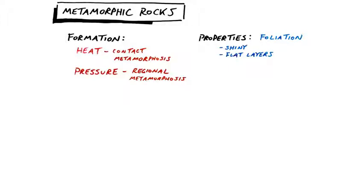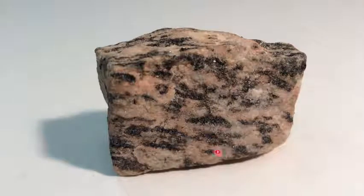The last thing foliation can mean is that it forms mineral stripes. If we look at this rock right here, we can see those mineral stripes in there.